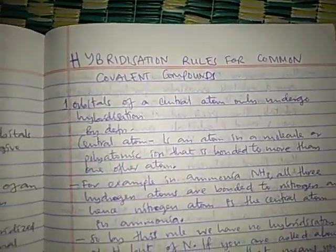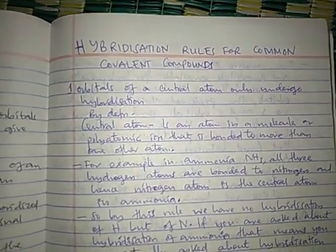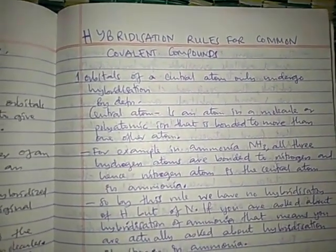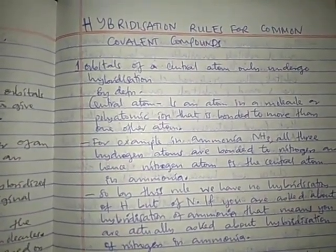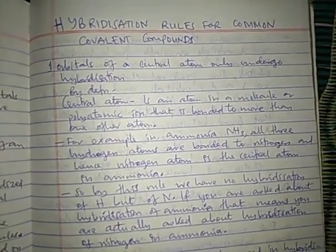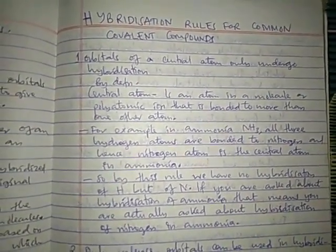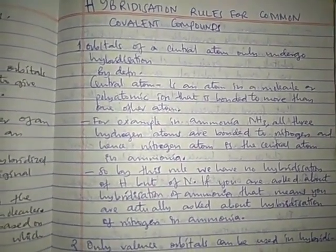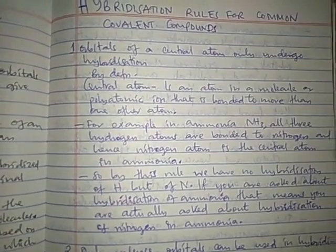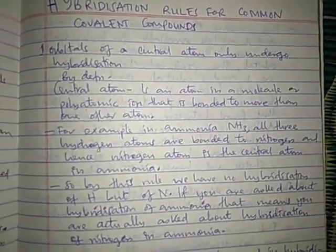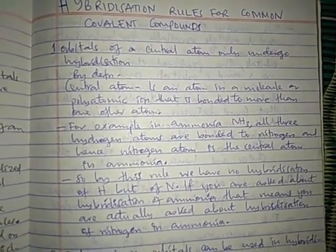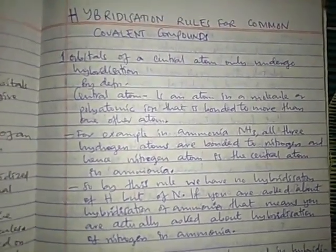Now let's look at the rules, or common principles, of hybridization in covalent compounds. The first principle is that only orbitals of the central atom undergo hybridization. A central atom is an atom in a molecule or polyatomic ion that is bonded to more than one other atom. For example, in ammonia, nitrogen is the central atom because it is bonded to three hydrogens. In methane, carbon is the central atom because it is bonded to four hydrogen atoms. Only that central atom undergoes hybridization.